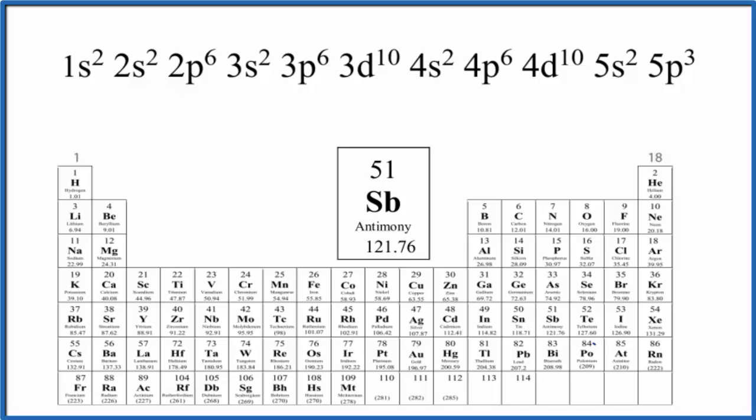In this video, we'll write the electron configuration for Sb, that's antimony. The first thing to note is that antimony is a neutral element - there's no negative or positive after it. The number of protons, the atomic number, equals the number of electrons.